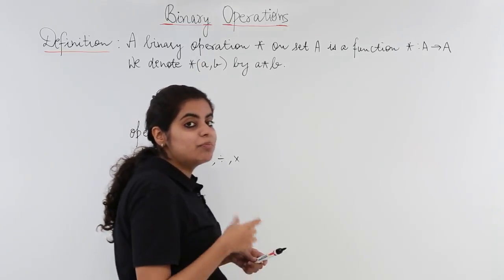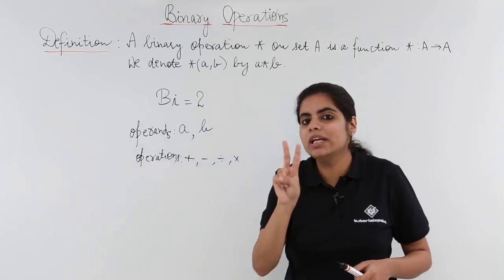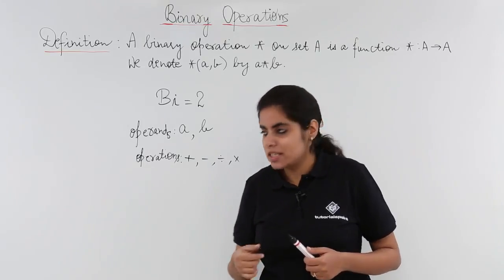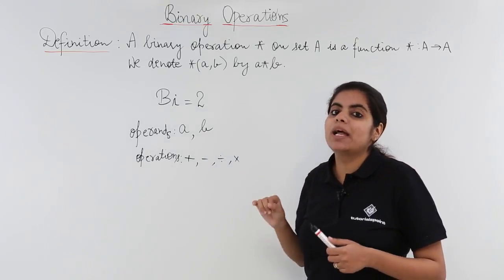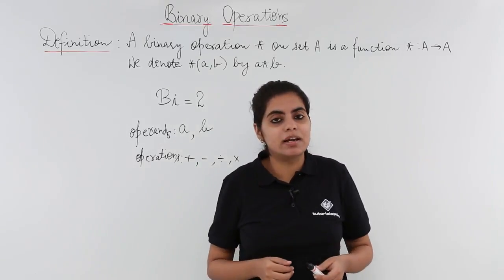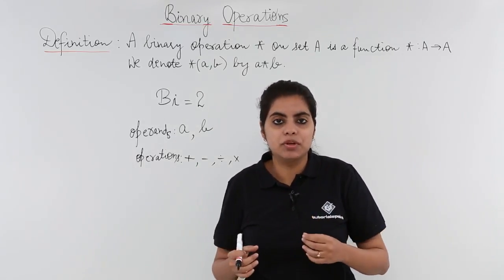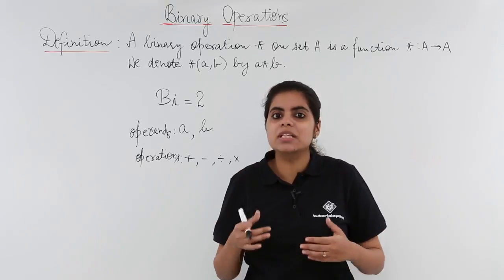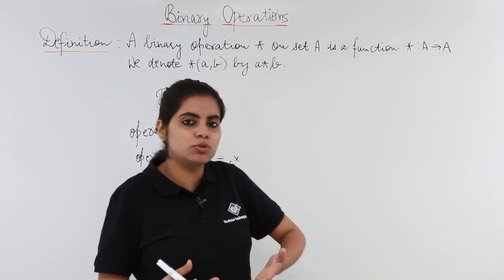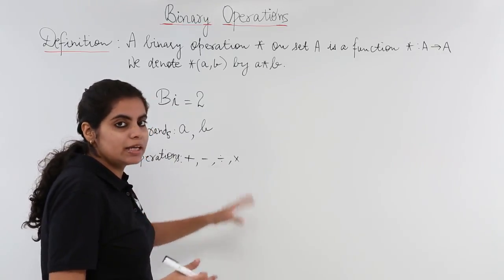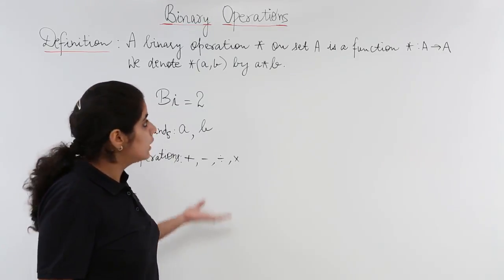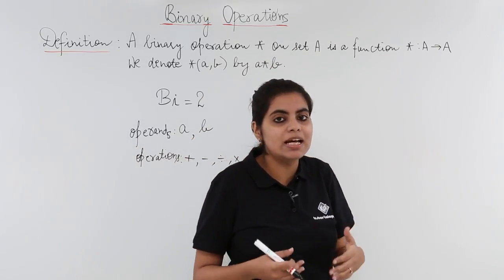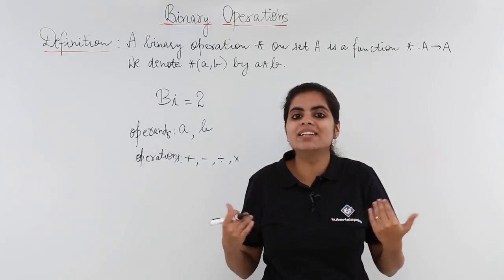In a binary operation, we will have only two elements or operands, and we apply some operation on these such as plus, minus, multiply, or divide. Now the question arises: 2 plus 3 gives 5, 2 multiply by 3 gives 6 - is that all? The definition has something related to set and function, so it has a wider dimension to it.